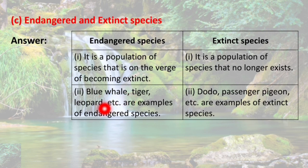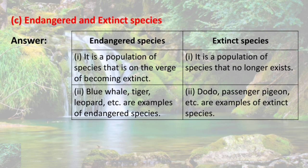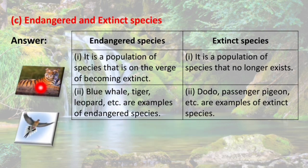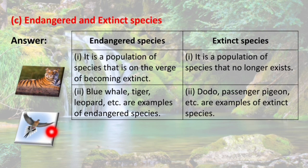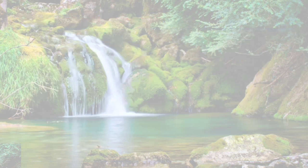Blue whale, tiger, and leopard — their population is decreasing day by day. It is possible that after a few years they will also become extinct. Dodo and passenger pigeons are already extinct — we have heard about them but have not seen them, like dinosaurs. Tiger's population has become very low so it is an endangered species, while passenger pigeon is an example of an extinct species.